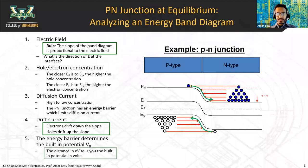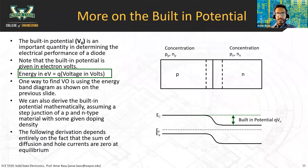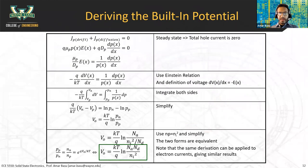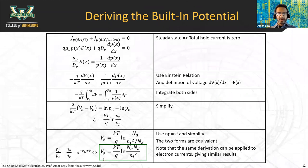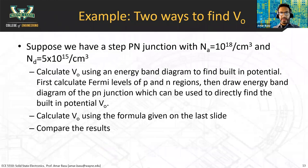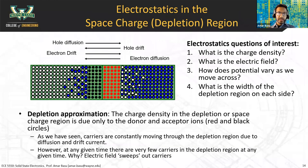The last thing we did was talk about a way to derive the built-in potential. One way of finding the built-in potential is by figuring out how much curvature you have in the energy band diagram. The other way is by using the simple formula: V₀ = (kT/q) × ln(NA·ND / ni²). That is the built-in potential. That's the crash course of what we covered last lecture on Monday.